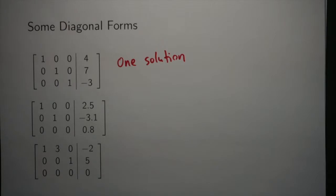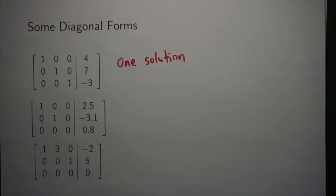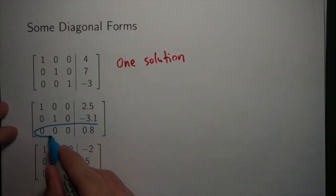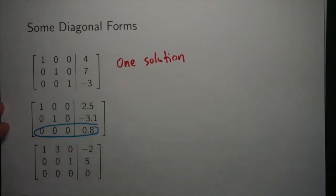The first diagonal form is the nicest. You have exactly one solution and you can read it directly off of what the matrix says. In this case, the first variable is 4, the second one is 7, and the third one is negative 3.